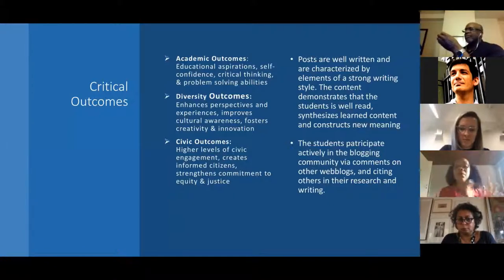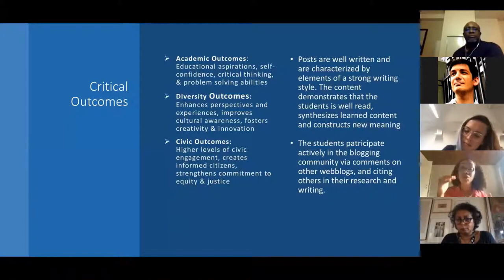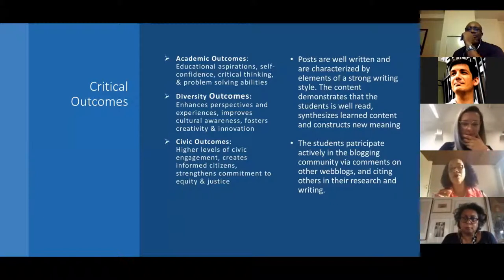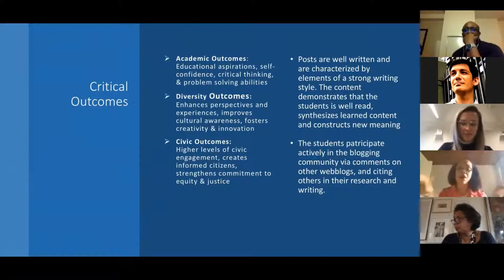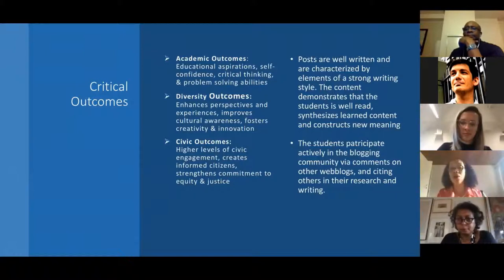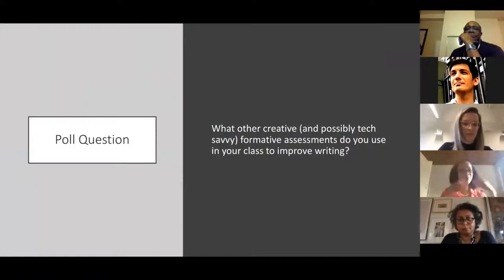The critical outcomes mapping back to inclusive pedagogy — researched over nearly 16 to 20 years — include academic outcomes, diversity outcomes, and civic outcomes. Academic outcomes cover educational aspirations, self-confidence, critical thinking, and problem-solving. Diversity outcomes include cultural awareness globally, especially given the blogs span a global spectrum, fostering creative yearning and innovation. Civic outcomes address how this strengthens students' commitment to equity and justice overall, even when they're doing statistics and p-values.